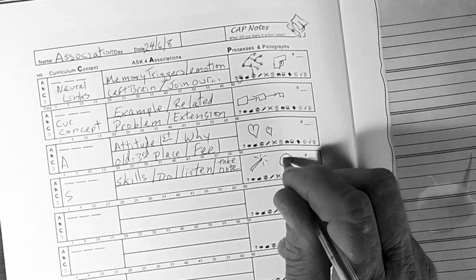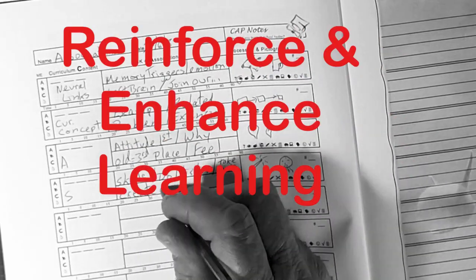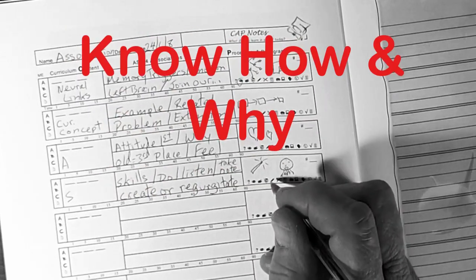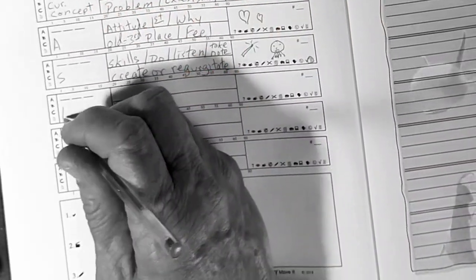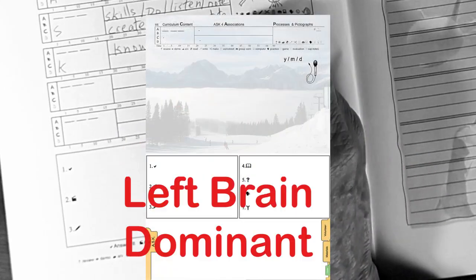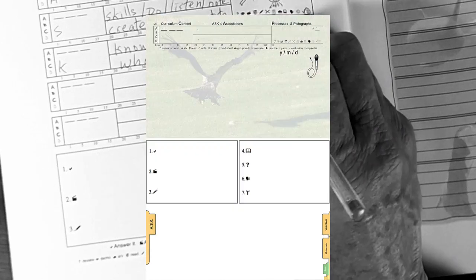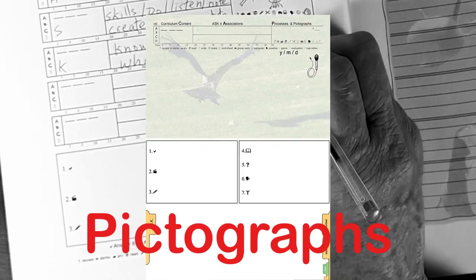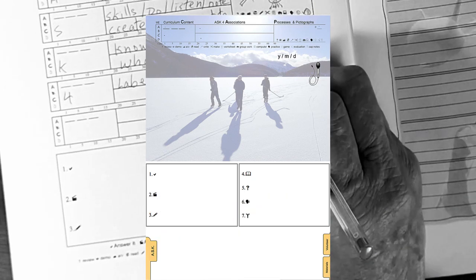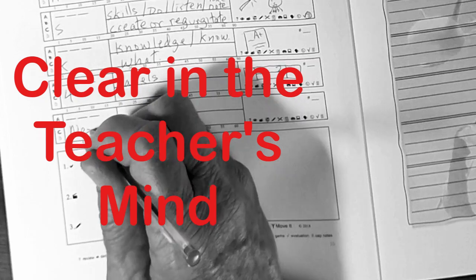Practicing creating cap notes is a great routine to reinforce and enhance learning. Just knowing how it's done and why it works is important. Cap notes work because creating associations help left-brain dominant auditory learners, while creating pictographs helps right-brain dominant or kinesthetic hands-on learners.